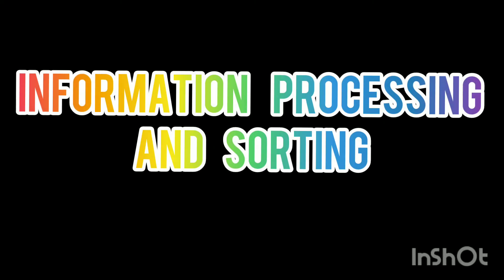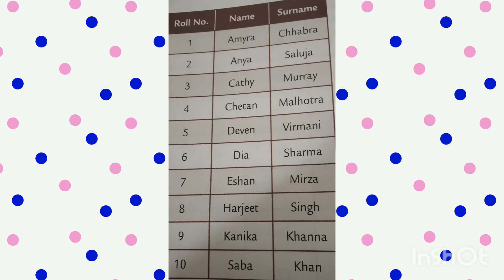Good morning everyone. Today we are going to see information processing and sorting. Sorting is arranging particular things in a particular order. You can arrange a list of students, notebooks, textbooks, or any things properly. Sorting can be done in ascending and descending order. Ascending order is a list which increases from a smaller number to a greater number.